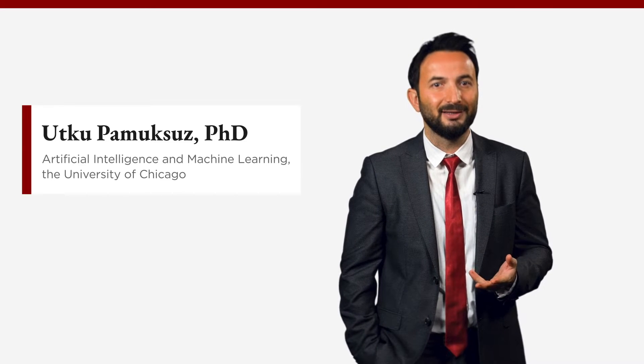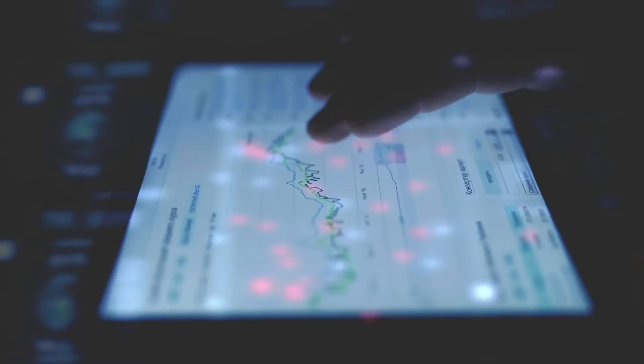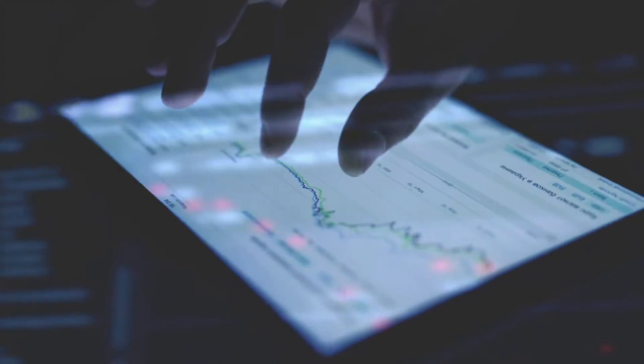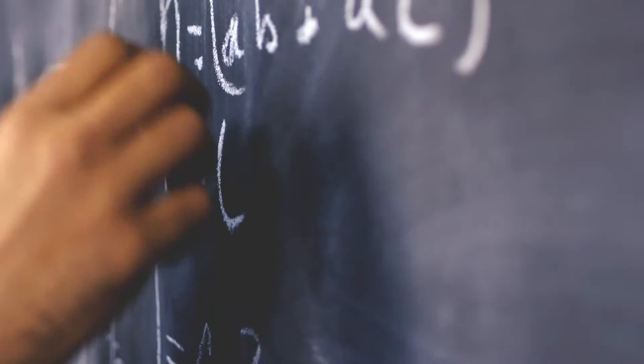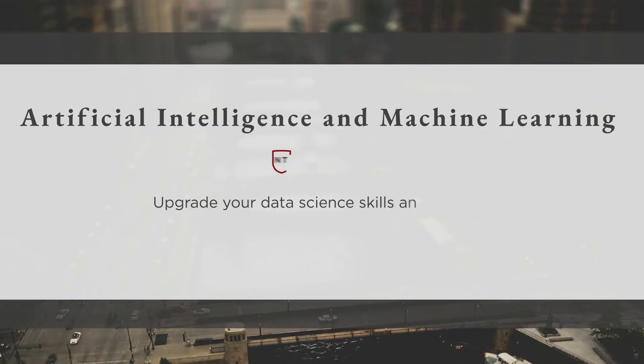I'm Utku Pamuksuz, I'm the instructor for the University of Chicago's artificial intelligence and machine learning course. For years I've been an AI researcher focusing on data science, business analytics, applied mathematics, and machine deep learning.